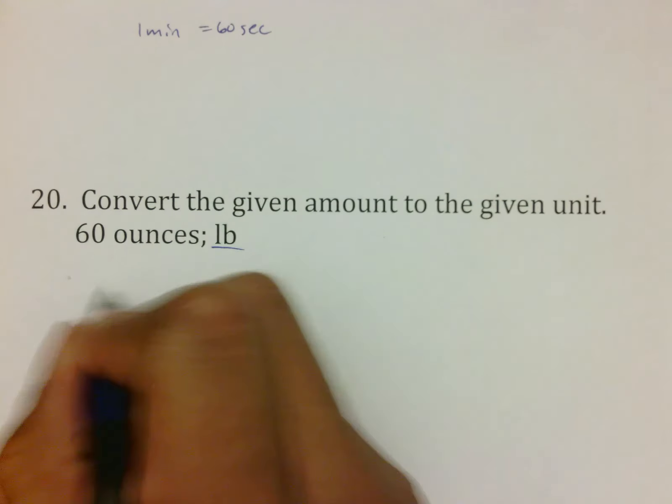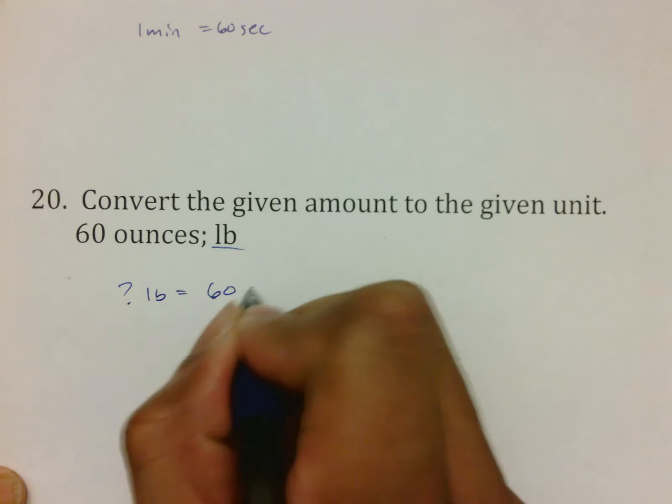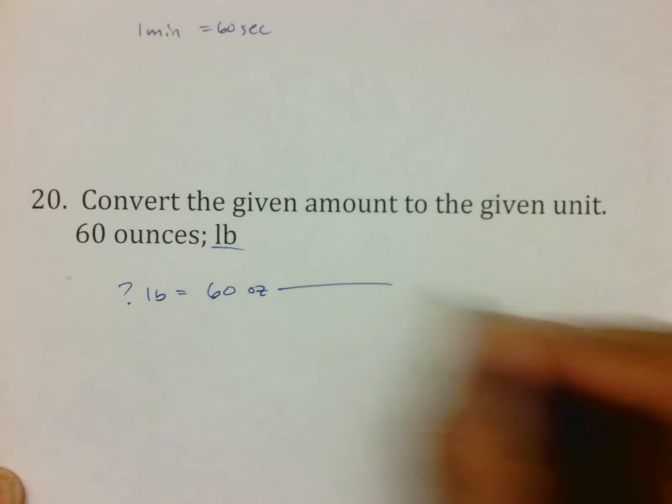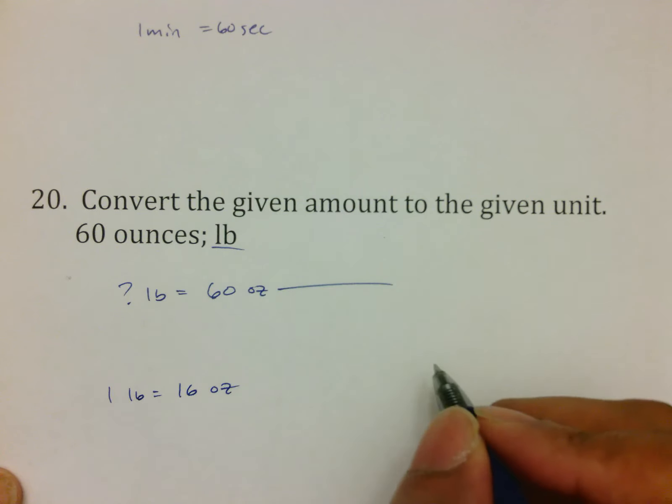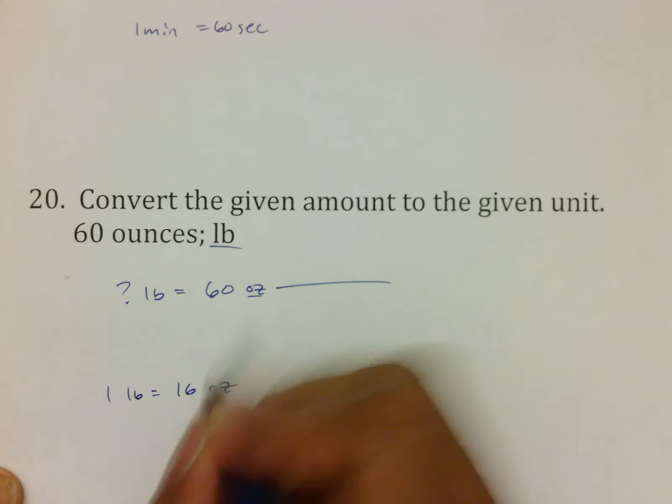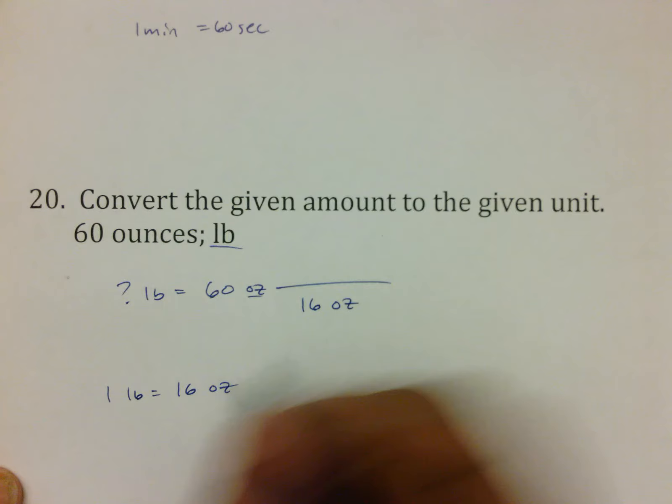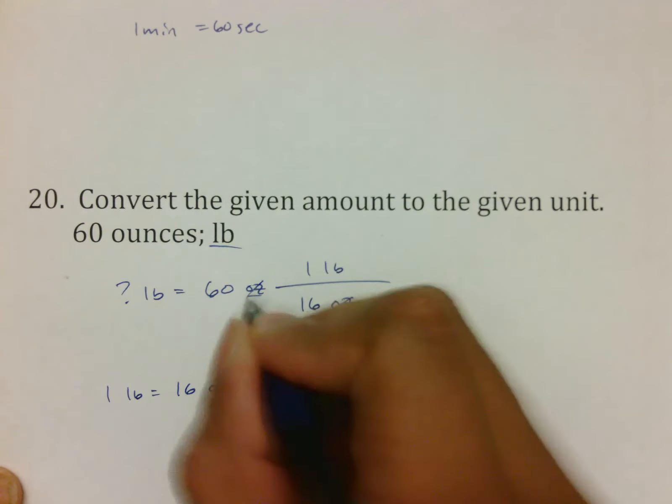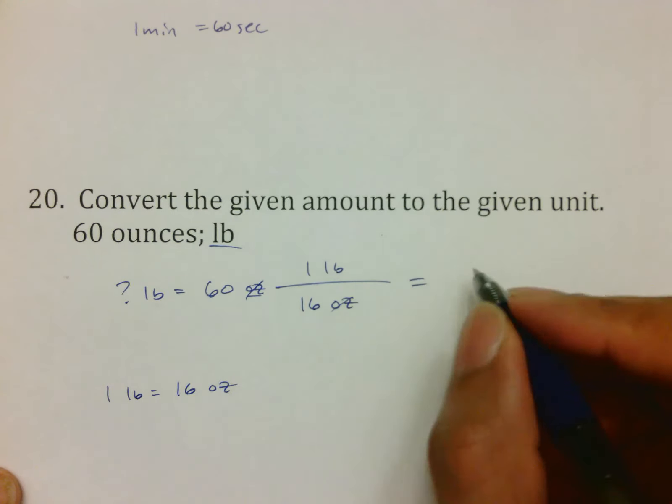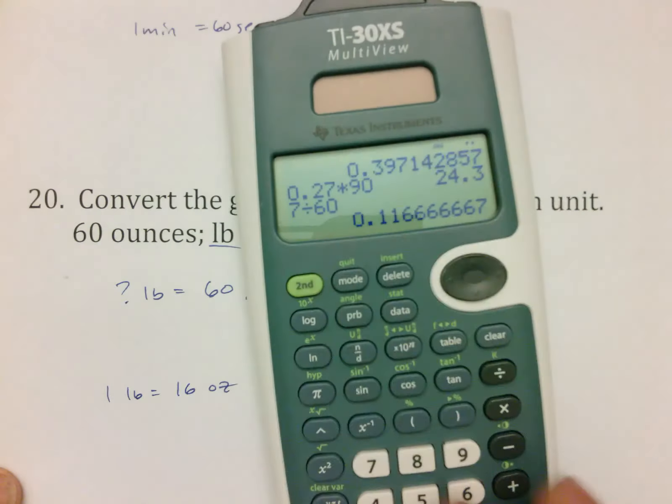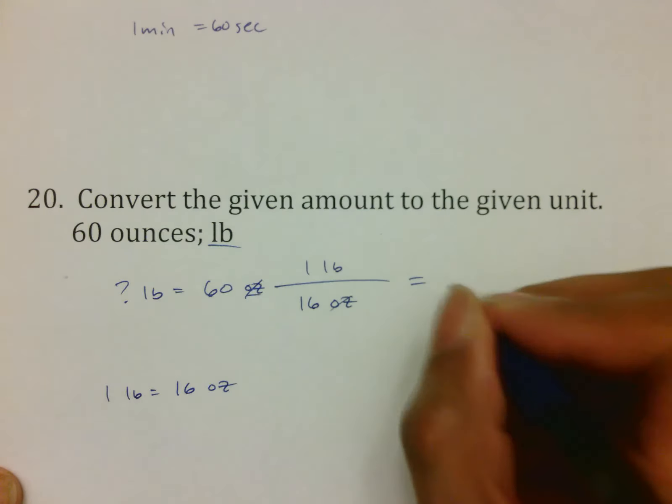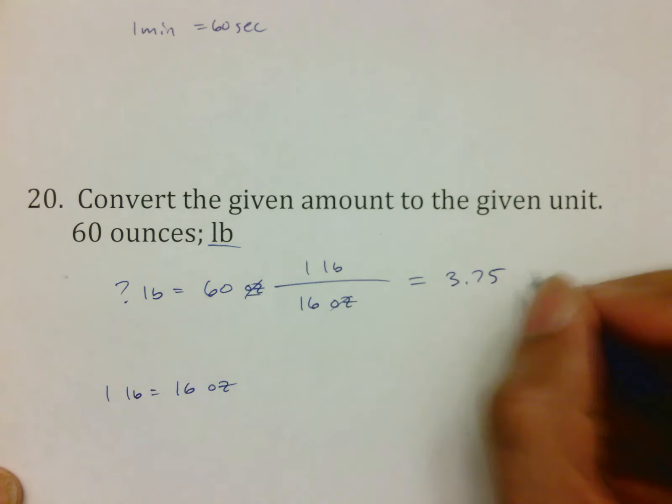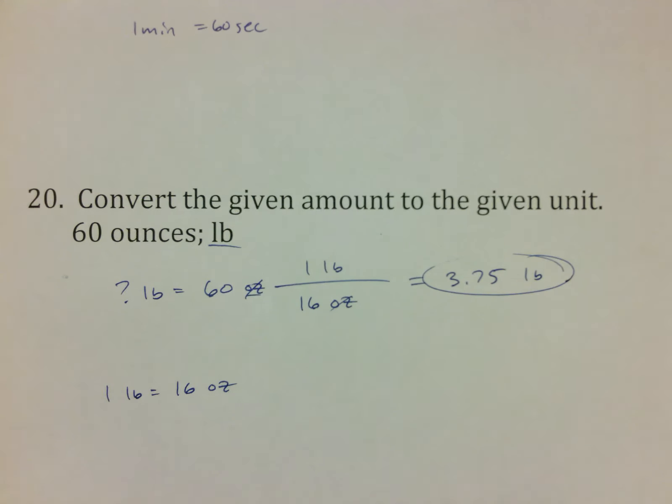Number 20, question mark pounds equals 60 ounces. Keep in mind the number for ounces and pounds is that 1 pound equals 16 ounces. If we got ounces here, it means we need 16 ounces on the bottom. We need 1 pound on the top. Those two things cancel. Because it's on the bottom, that means we divide 60 by 16, and you get 3.75. Because it's not a bunch of numbers, I can leave the 3.75 just fine. 3.75 pounds is what you end up with on that.